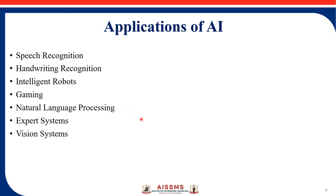Natural language processing makes it possible to interact with a computer that understands natural language spoken by humans. Expert systems are applications or machines that use special information to impart reasoning and provide explanations and advice to users.